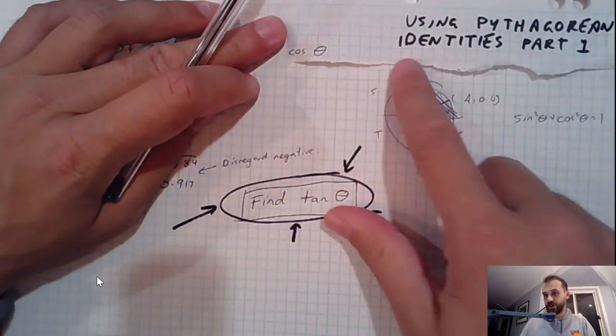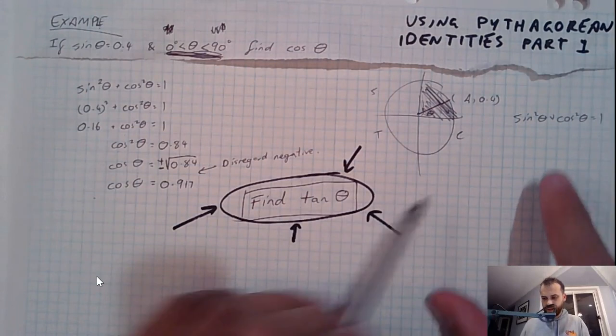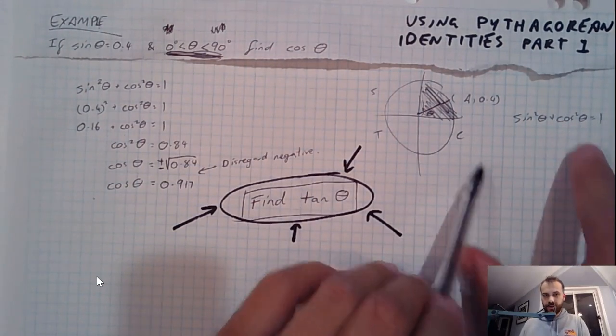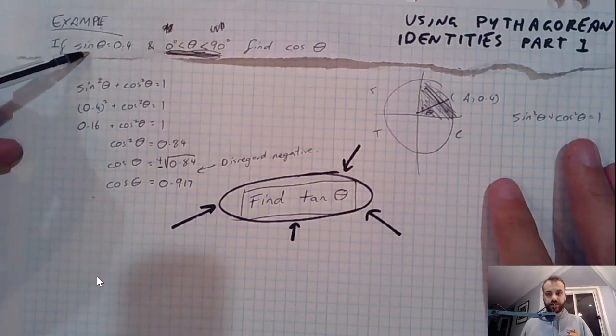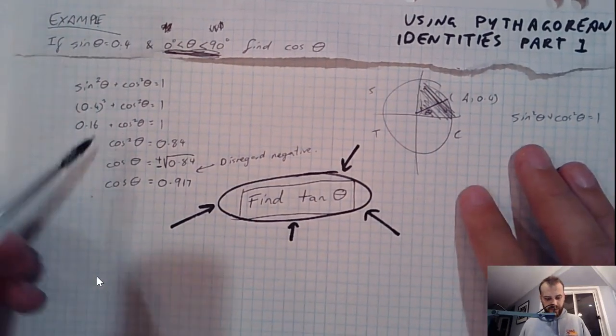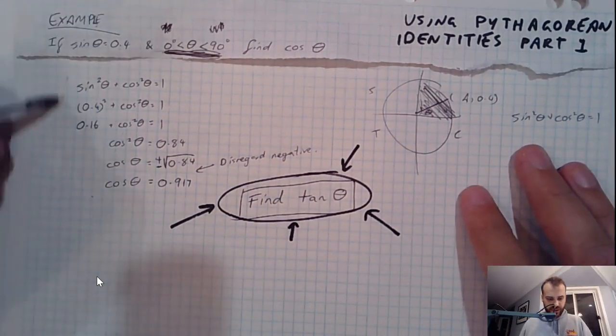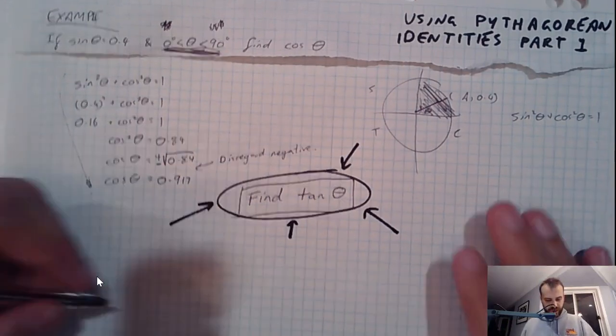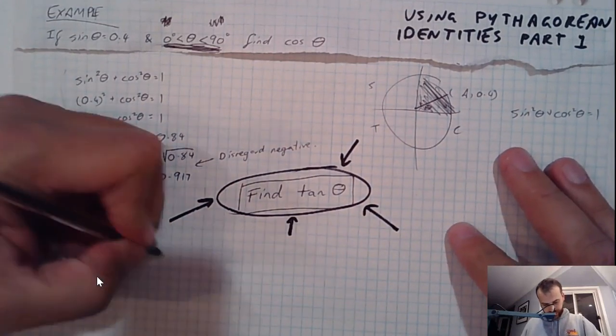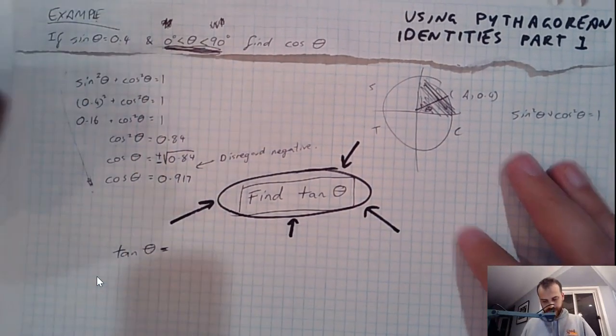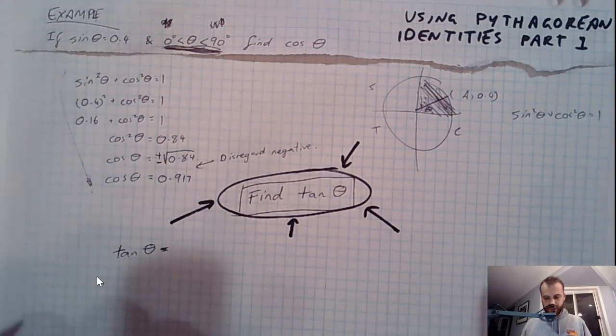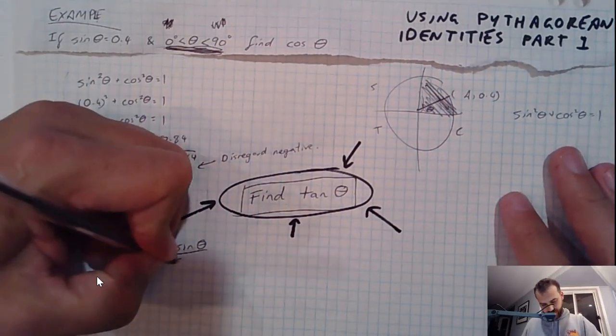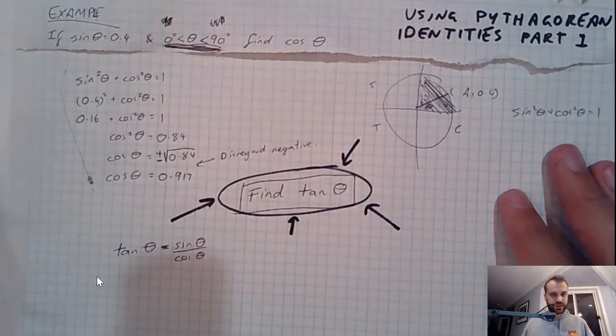Now we can still use the Pythagorean identity for this. Even though you can't see tan in the Pythagorean identity, we can find sine, or we're told sine, we can find cos using the Pythagorean identity, and you should all know that tan theta is equal to, make sure we get this in the right order, sine theta over cos theta.